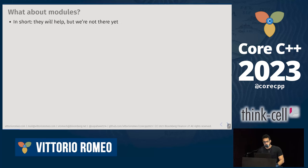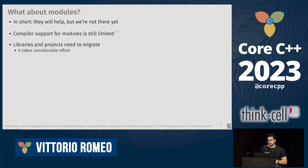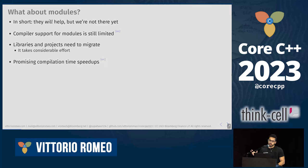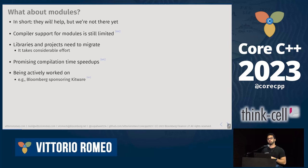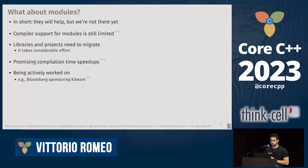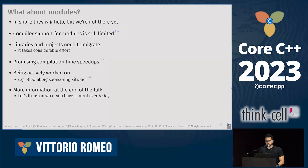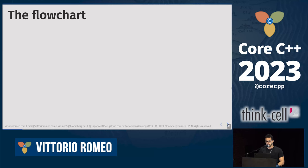Just one slide on modules: they will help, but we're not fully there yet. Compiler support is still quite limited, and migrating existing projects requires effort. There are promising compile-time speedups but also trade-offs — the current build model is highly parallel, while modules can create chains of dependencies. Bloomberg, the company I work for, is actively sponsoring Kitware to implement modules in the CMake ecosystem. You can actually try CMake and modules together on Compiler Explorer right now.